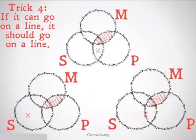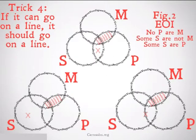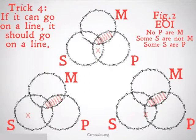Trick number four: if it can go on a line, it should go on a line. If you look at these three possible diagrams and look at figure two — E-O-I — it should be clear which one is correct. The third one, where the X is on the line, is the only correct answer, because even though the X could go in the middle, it could also go on the side with just S. So the only place it should go to correctly represent this is on the line between S and P.